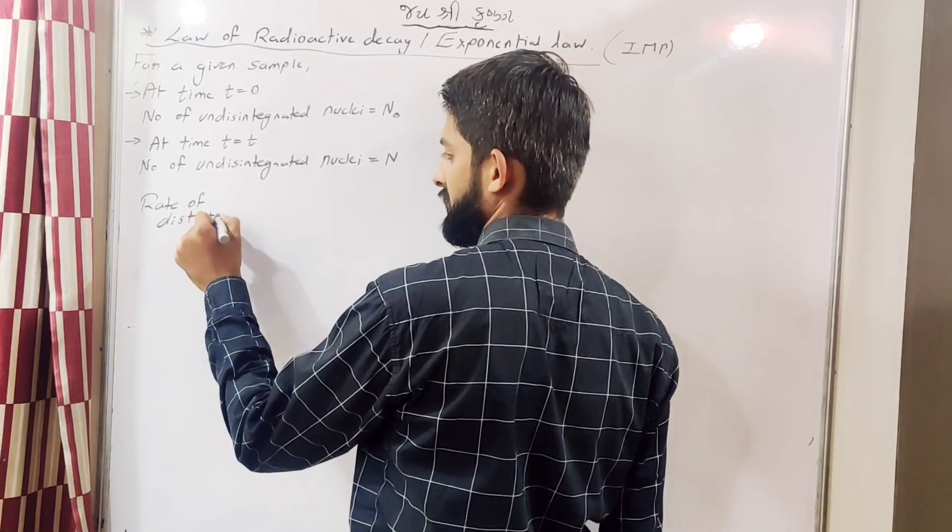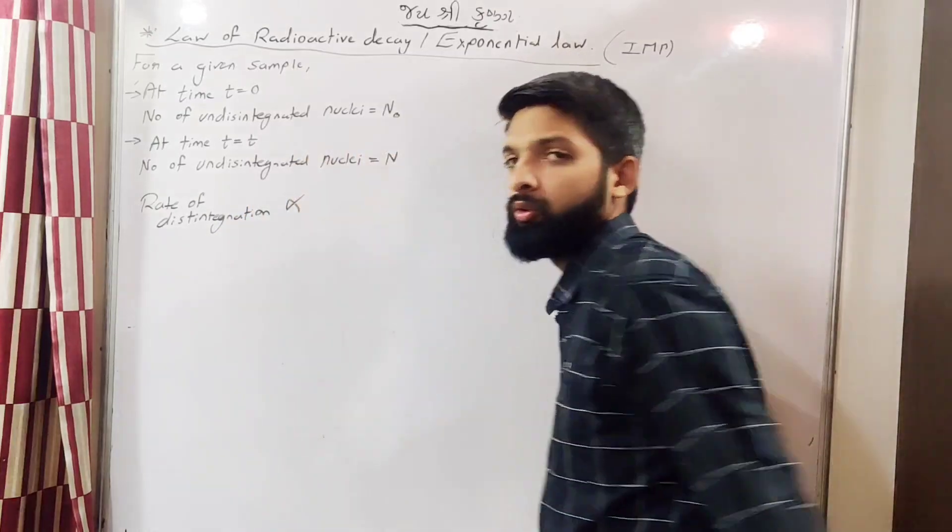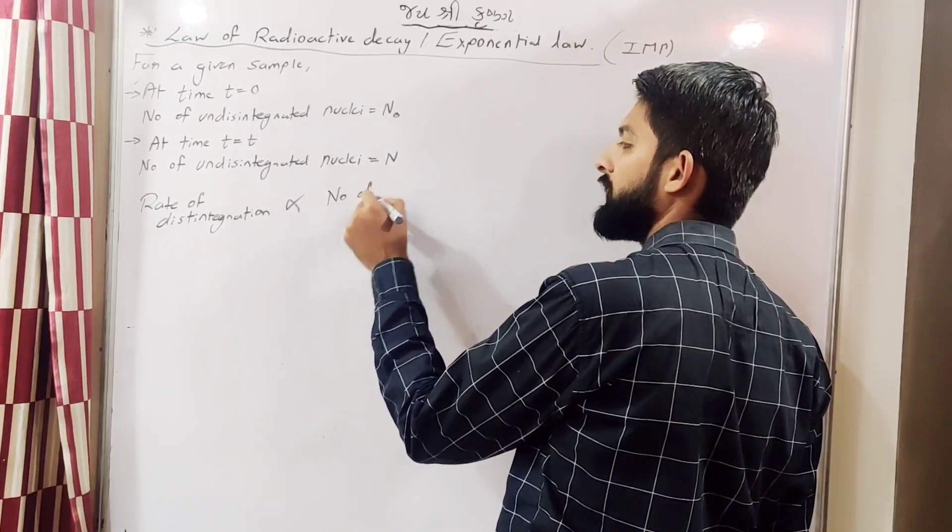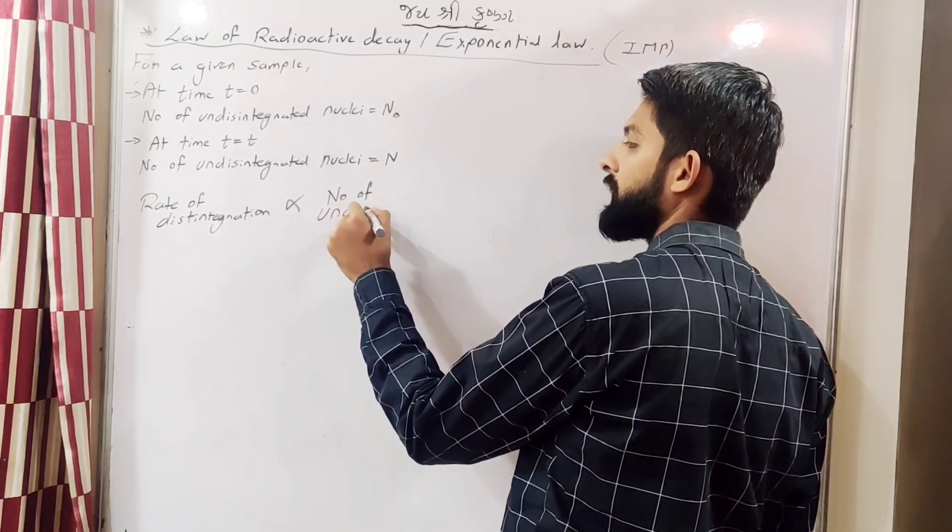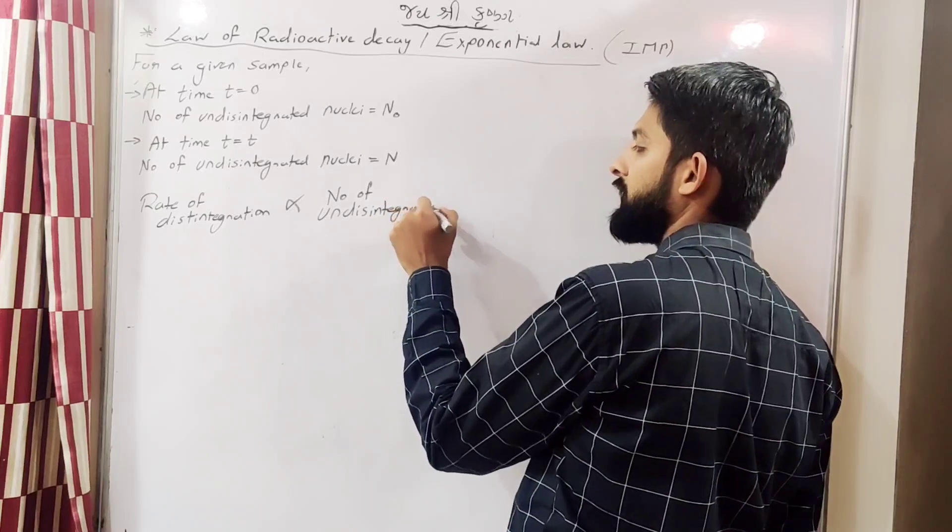Rate of disintegration is proportional to the number of undisintegrated nuclei.